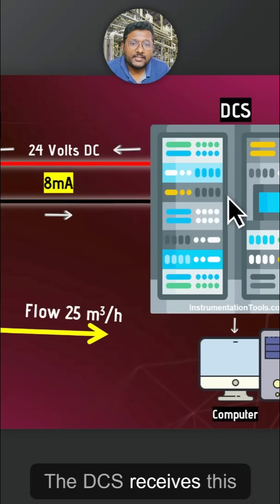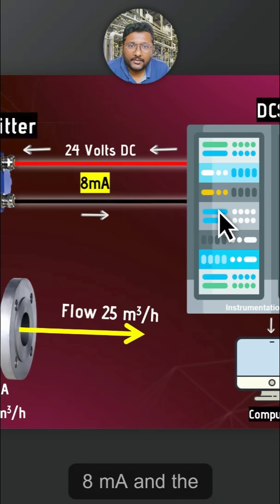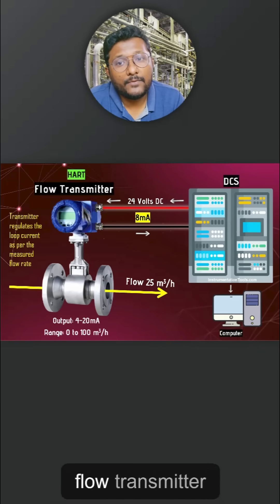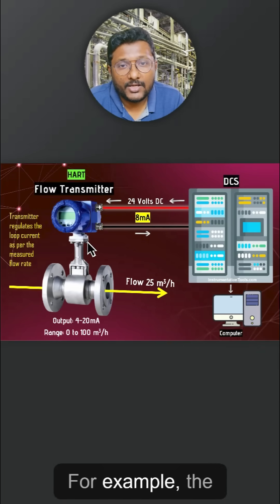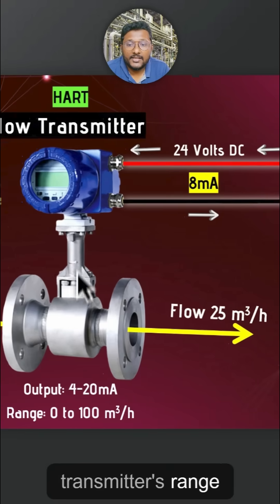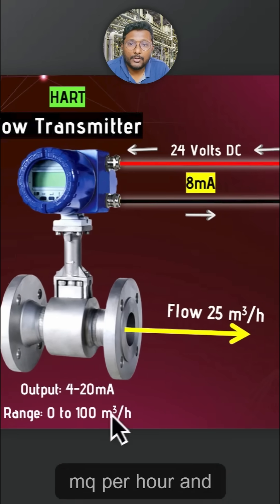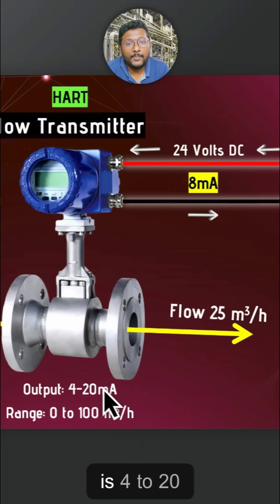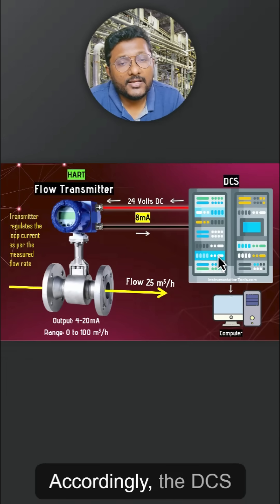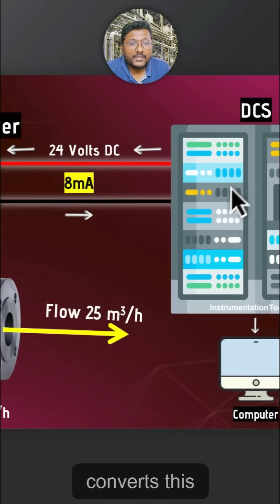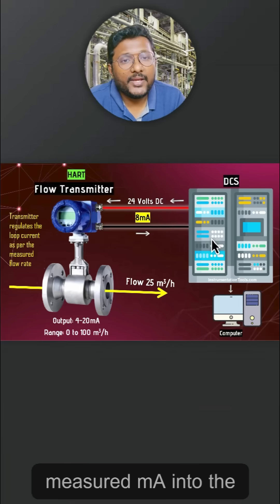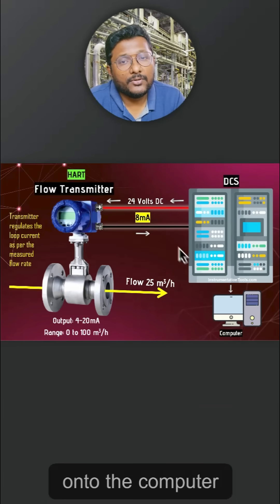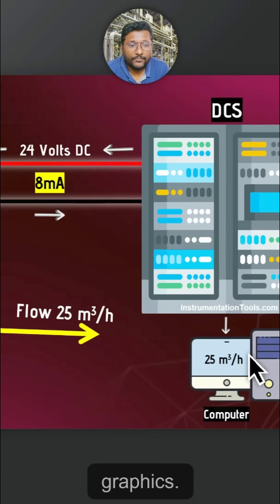The DCS receives this 8 mA and, since it is already configured with the flow transmitter details — for example, the transmitter range is 0 to 100 m³ per hour with an equivalent signal of 4 to 20 mA — the DCS converts the measured mA into the equivalent flow rate and displays it on the computer graphics.